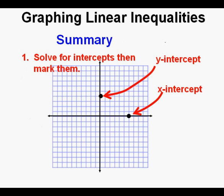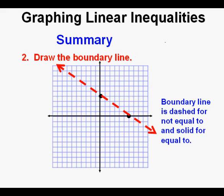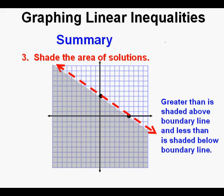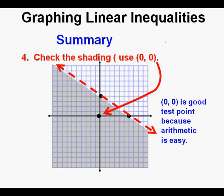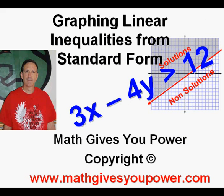To summarize: first, find the x and y intercepts by covering the y and x terms respectively, then solve for and mark each intercept. Then draw the boundary line — dashed for 'not equal to' (less than or greater than), and solid for 'equal to.' Now shade above or below: greater than means above and less than means below that boundary line. Finally, use a point to check if the correct area was shaded — (0, 0) is usually the best coordinate since the calculations are really easy. This has been graphing linear inequalities from standard form. Thanks for viewing.